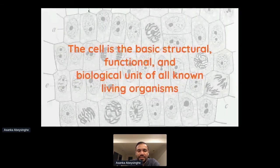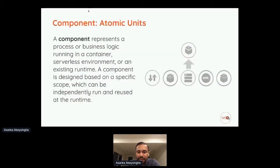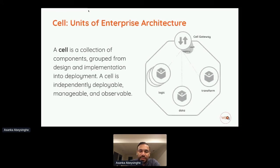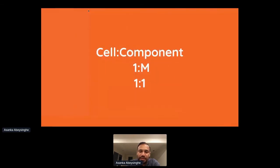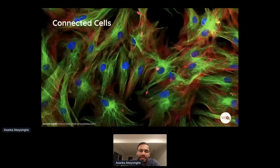The atomic component of this architecture is called a component. A component can be anything running in your data center — a database, a service, a microservice, a message bus, a broker — anything. The combination of components is called a cell. A cell is a collection of components, and its main feature is a cell gateway that controls calls to internal components. The cell-to-component relationship is typically one-to-many, but can be one-to-one.